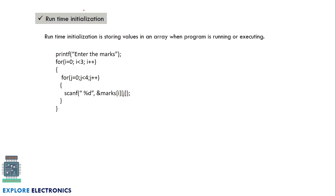Runtime initialization means storing values into an array while the program is executing. We use a for loop to read values entered by the user. Since a two-dimensional array has two subscripts, we need two for loops — an outer loop for i (rows) and an inner loop for j (columns) — to get each value from the user.